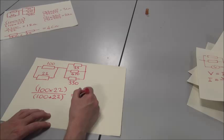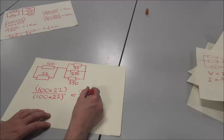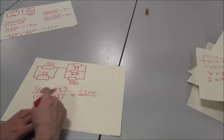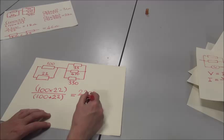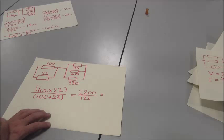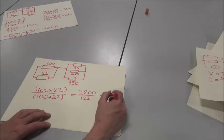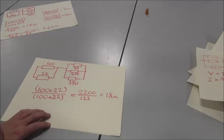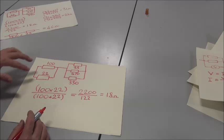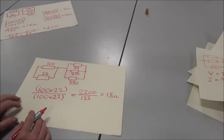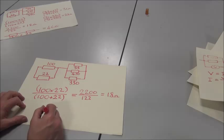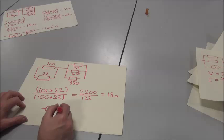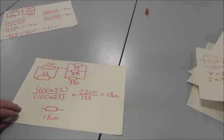100 times 22 is 2200. 100 plus 22 is 122. And when you do that sum on your calculator, it will come to 18 ohms. With resistances, you always round it up to the nearest number. That means that both these two resistors here can be replaced by one resistance with a value of 18 ohms. That's the first part of our calculation.